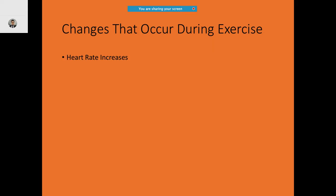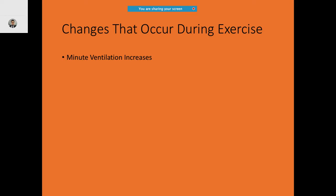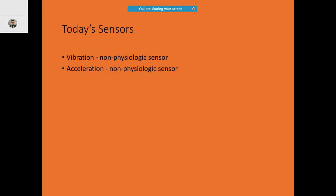During exercise, heart rate increases, oxygen saturation increases, cardiac output increases, body heat increases, and minute volume ventilation (MVO) also increases, although the QT interval may shorten. Movement is a key input. Modern sensors are very smart and efficient — they are non-physiologic (e.g., vibration or acceleration) as well as physiologic (e.g., minute ventilation).